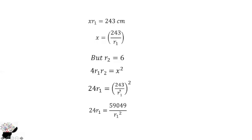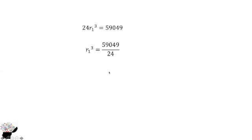Expanding the right side gives 59049 divided by r1². Multiplying both sides by r1² gives 24r1³ = 59049. Dividing through by 24 gives r1³ = 59049 / 24.